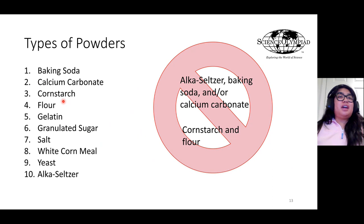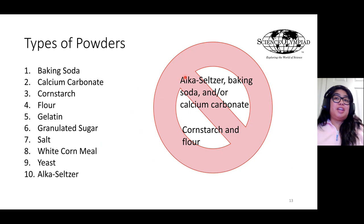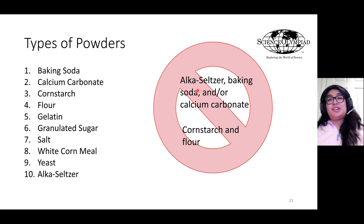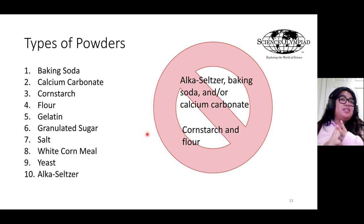There are 10 types of powders that are fair game for this event, such as baking soda, calcium carbonate, cornstarch, flour, gelatin, granulated sugar, and so on. There are restricted powder combinations: I will never mix any combination of Alka-Seltzer, baking soda, and/or calcium carbonate, because these react too similarly to the given liquids and look similar — it's very hard to discern them when mixed. I will also never mix cornstarch and flour, so you don't have to practice those combinations.